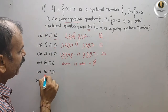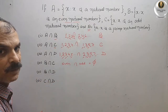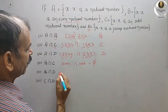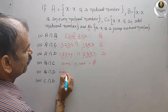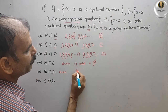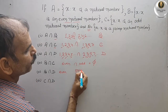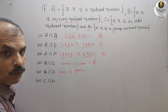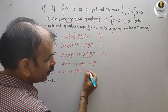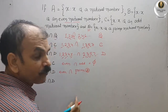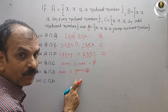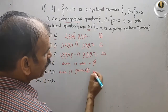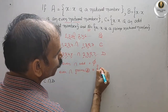Next, B intersect D. B is even numbers and D is prime numbers, and we have to intersect. We know that in prime numbers, 2 is also there, which is an even number. All others are odd numbers. Therefore, our answer here is {2}.